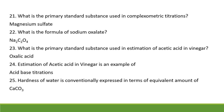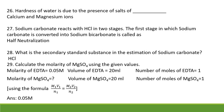What is the primary standard substance used in estimation of acetic acid in vinegar? Oxalic acid. The formula of oxalic acid is H2C2O4; it is a dicarboxylic acid. Estimation of acetic acid in vinegar is an example of acid-base titrations. Hardness of water is generally expressed in terms of equivalent amounts of calcium carbonate.